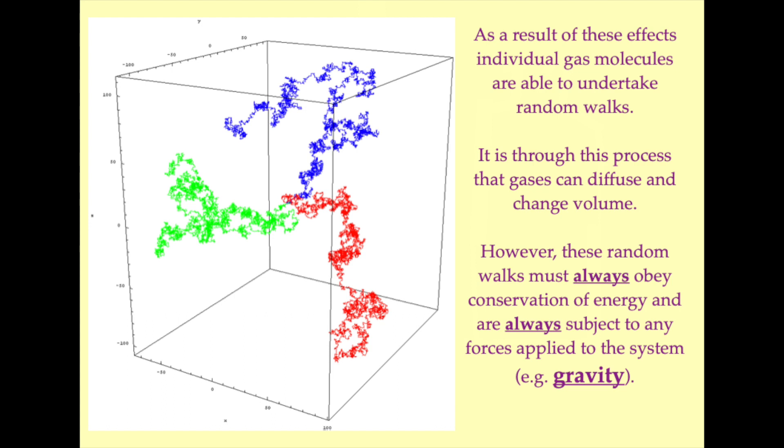Random walks undertaken by component molecules are what allow gases to spontaneously diffuse and change volume. However, all trajectories taken by individual molecules—which is to say all random walks—must obey conservation of energy and must conform to the forces applied to the system as a whole. Diffusion is not a source of energy and will not grant a molecule in Earth's atmosphere enough energy to escape Earth's gravitational well.